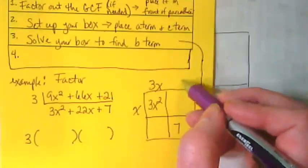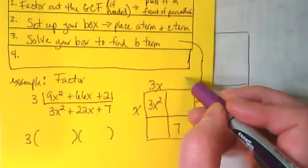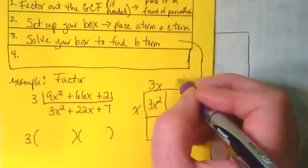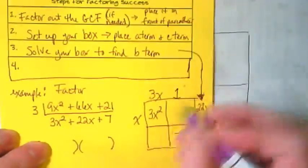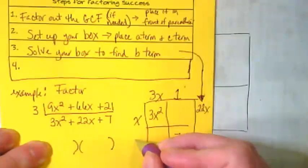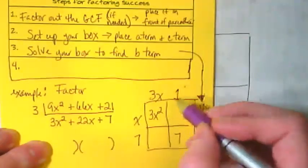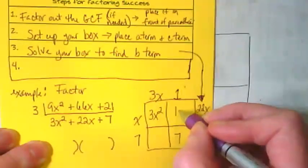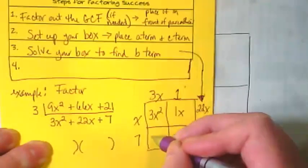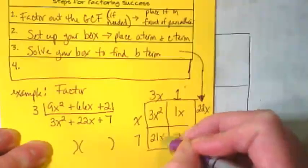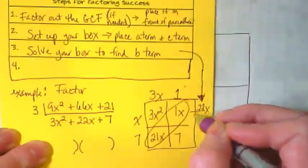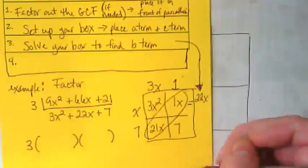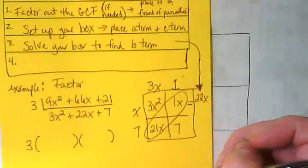What's going to go in this spot up here? The 1. And what's going to go in this spot down here? 7. Let's see if that works. 1 times x is going to give us 1x. 3x times 7 is going to give us 21x. 1x and 21x does equal 22x. So that is our solved box.